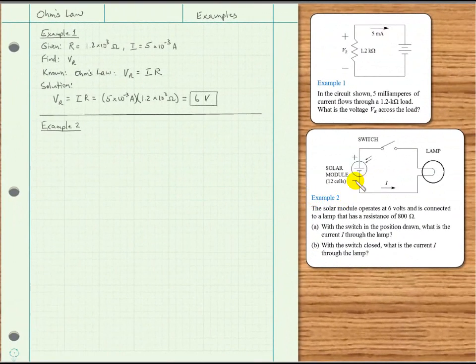Example 2. Here we have a solar module for an energy source in this circuit. And it says the solar module operates at 6 volts and is connected to a lamp that has a resistance of 800 ohms. Part A. With the switch in the position drawn, what is the current I through the lamp?